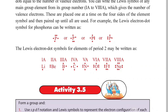The number of valence electrons determines the electron dot symbol for elements. The lowest electron dot symbol for elements gives the number of valence electrons equal to the group number.